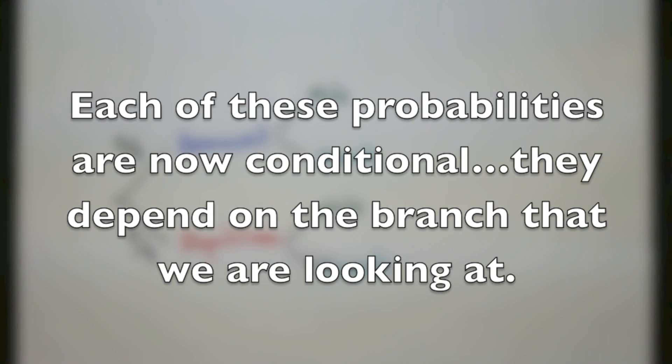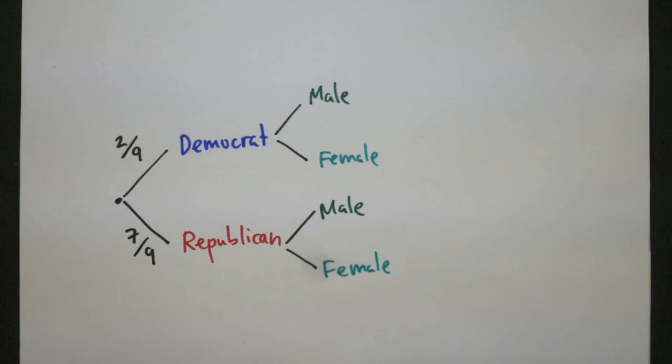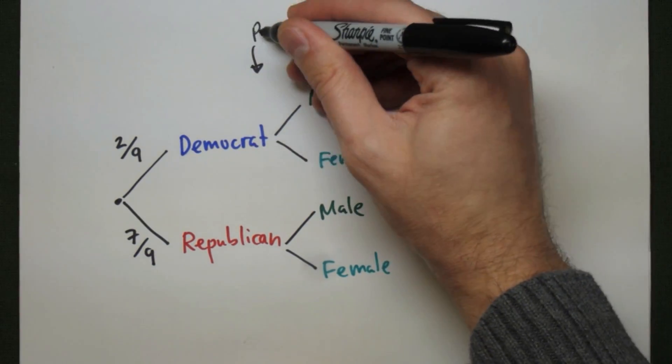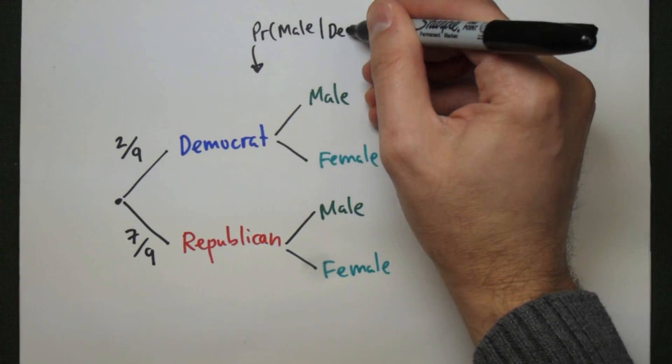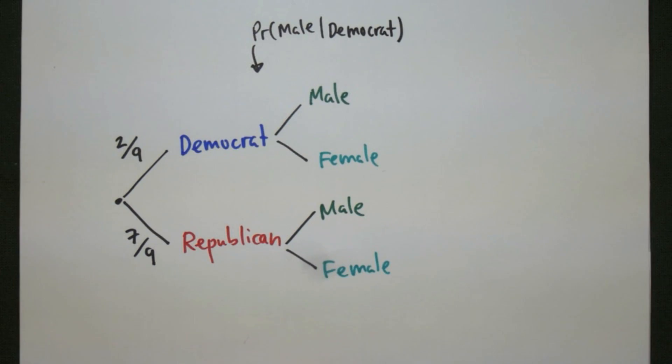The probabilities that go on each of these branches will be conditional probabilities. They depend on the previous branch, the one that we were looking at before. For the first branch up here, the probability will be the probability that the representative is male, given that they're Democrat.